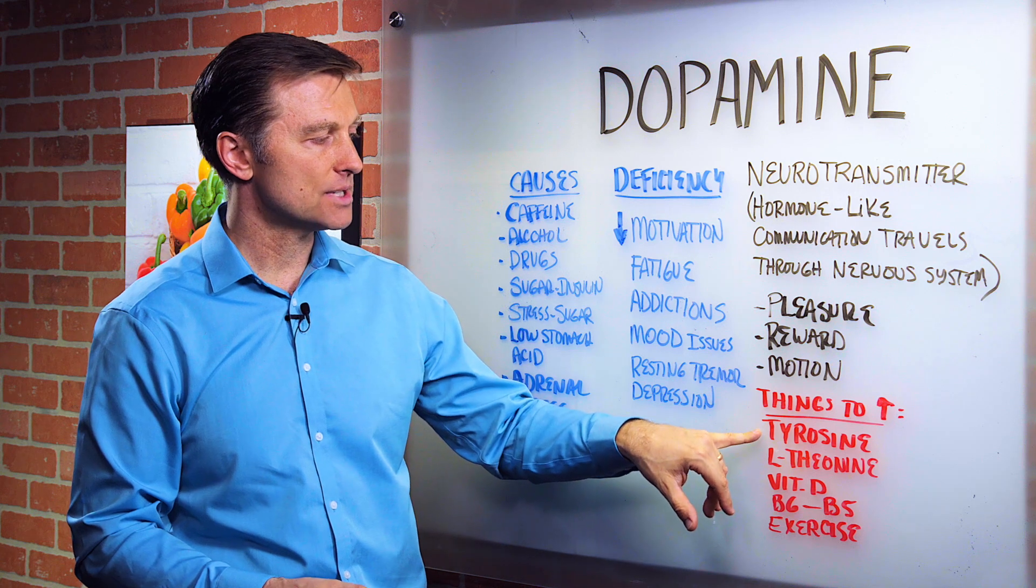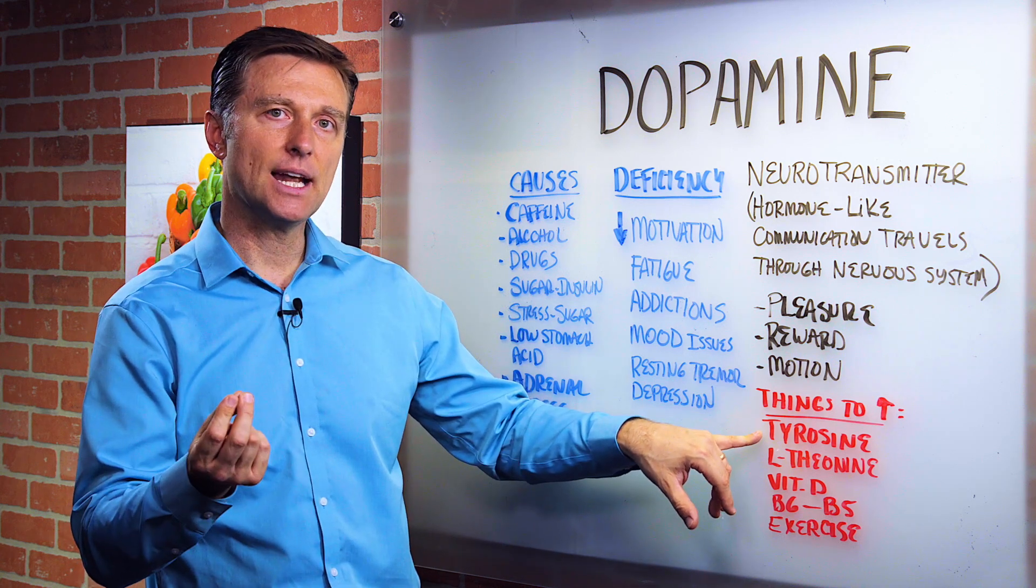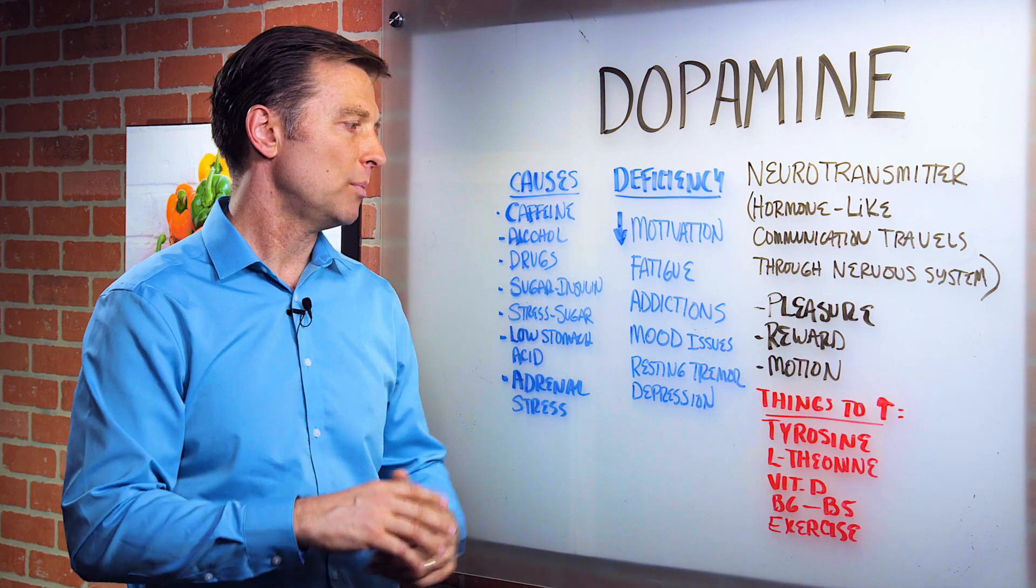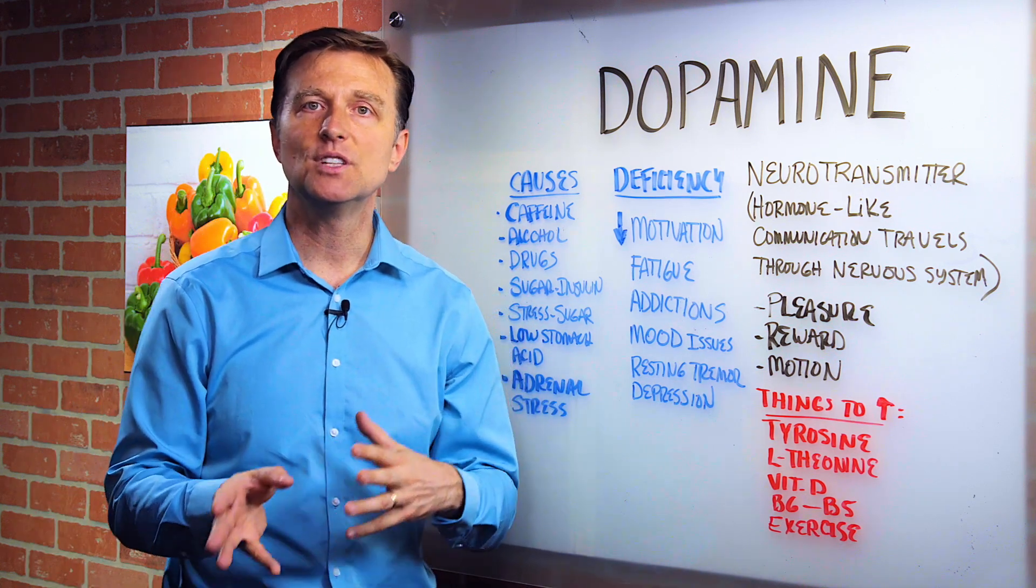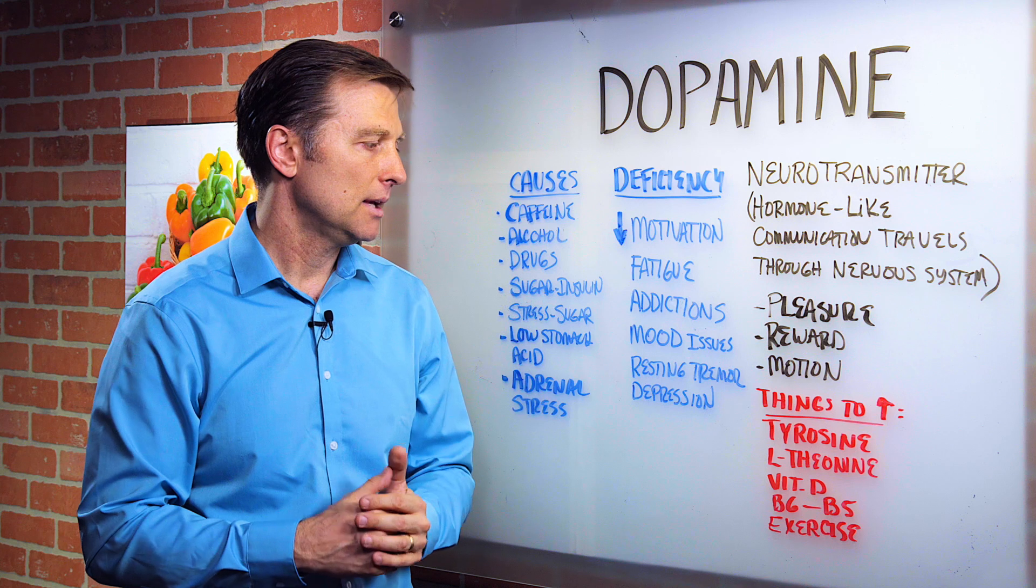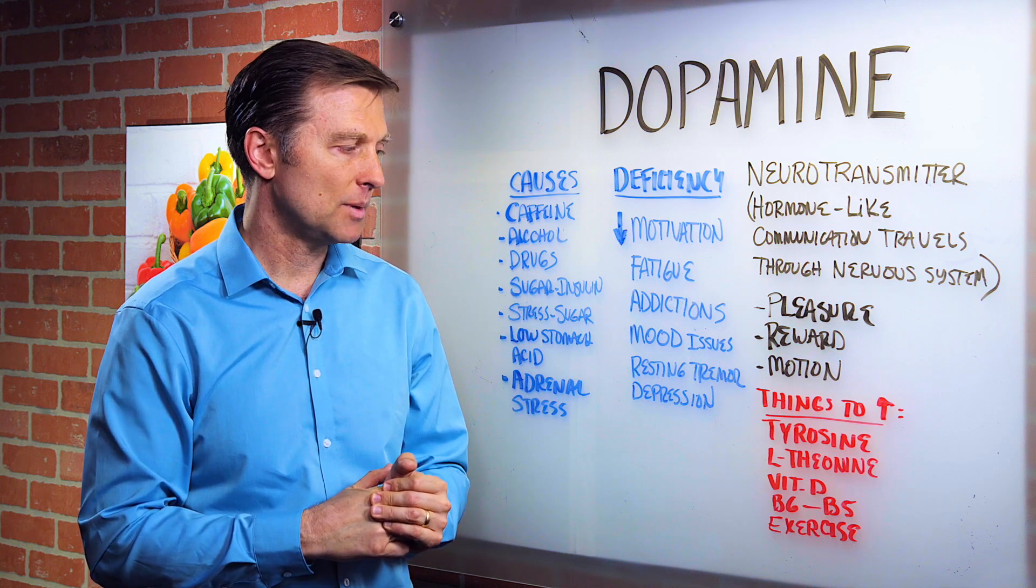But also, here's nutrient-wise, you can take tyrosine. That's a natural amino acid that is a precursor to dopamine. You can take L-theanine, which is a precursor to dopamine. It can help build it up. It's a natural amino acid.